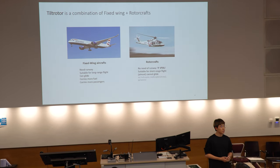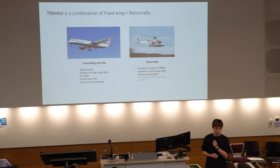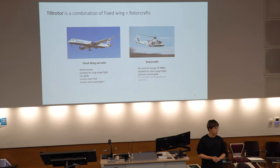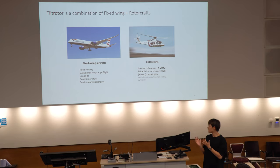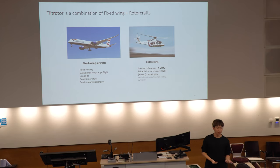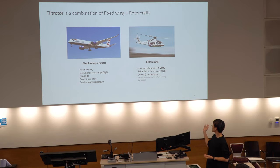Tiltrotor aircraft is a combination aircraft combining the pros of fixed-wing and rotorcraft. We all know how fixed-wing aircraft is — this is a picture of an Airbus A350. It's called fixed-wing because the wing does not move. On the other hand, rotorcraft — for example, helicopters or DJI drones — these are rotorcraft.